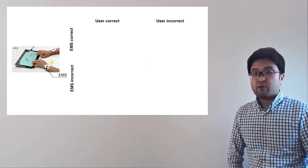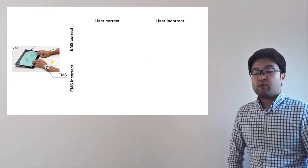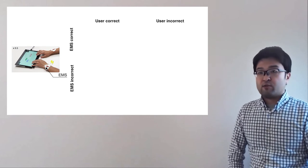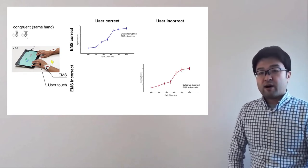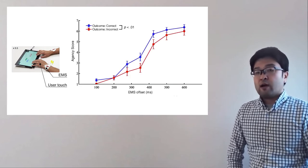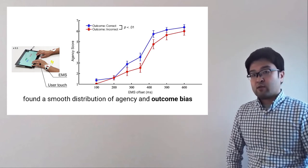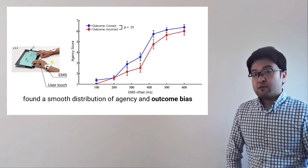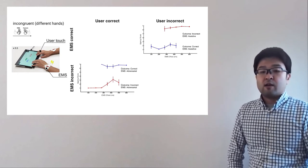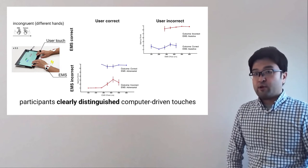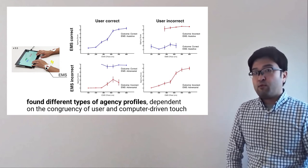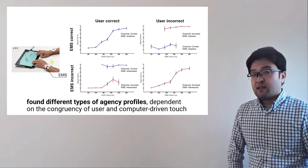Next, results. We found four patterns. User incorrect and correct or EMS correct or incorrect. First, I'll explain the congruent pattern, same hand pattern. We can find the smooth distribution aligned with the EMS timing and also outcome biases. This means participant and the computer are well-matched. In contrast, in incongruent condition, the different hand pattern, the participant distinguished clearly from the computer-driven touch. Taken together, we found a different agency profile based on the dependency between the user and computer-driven touch.